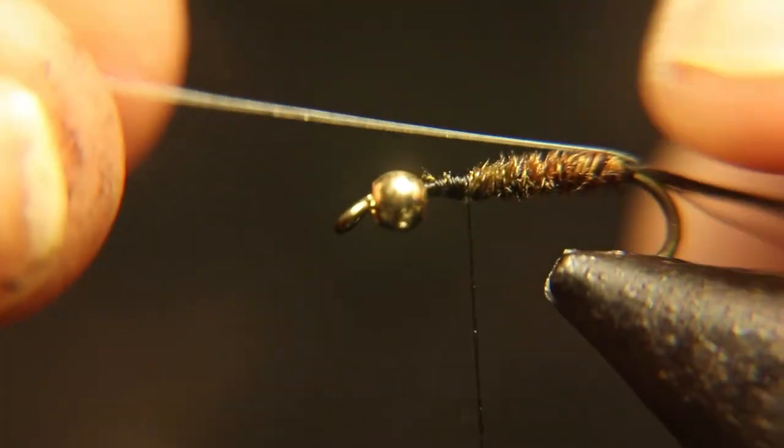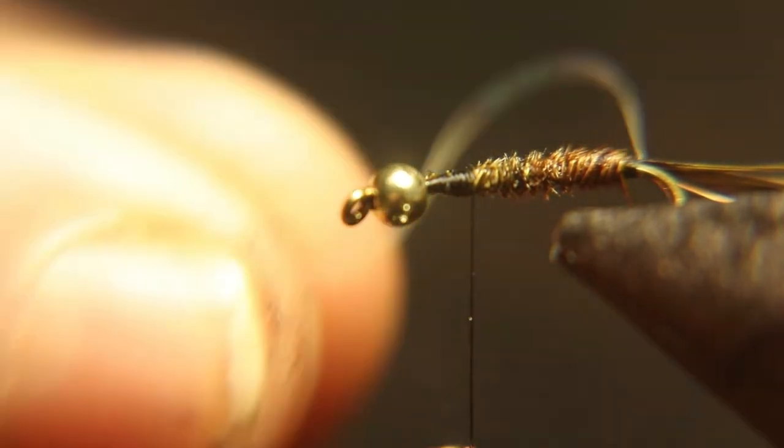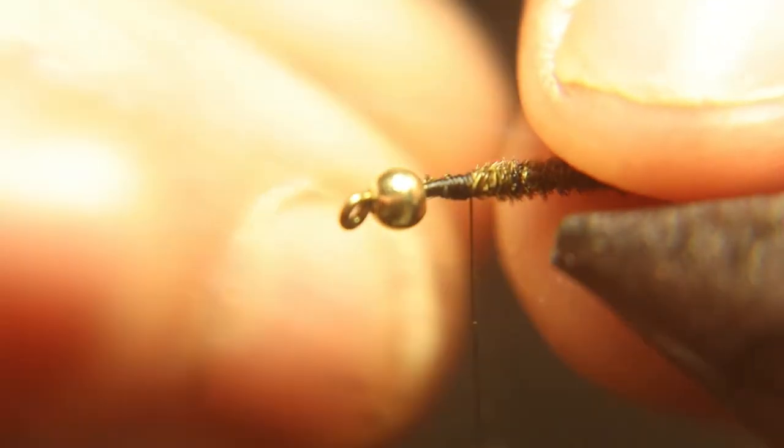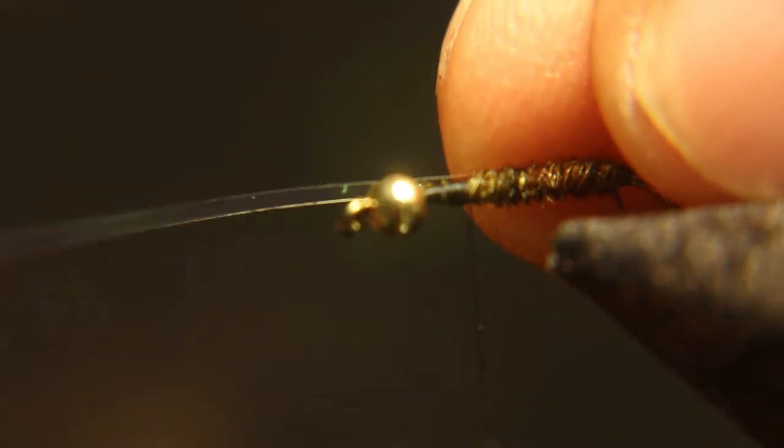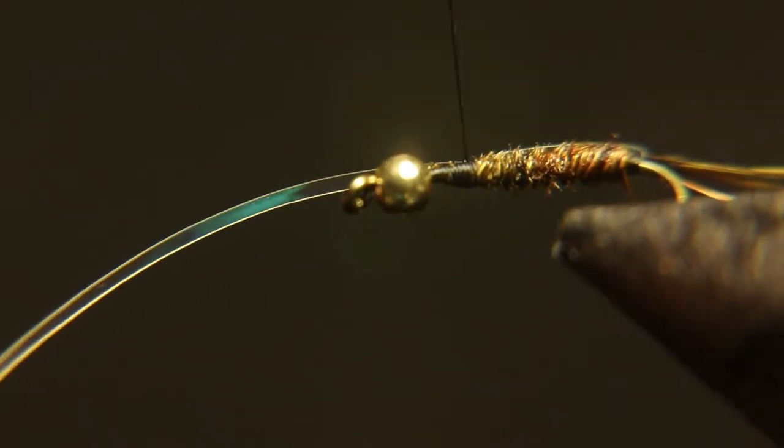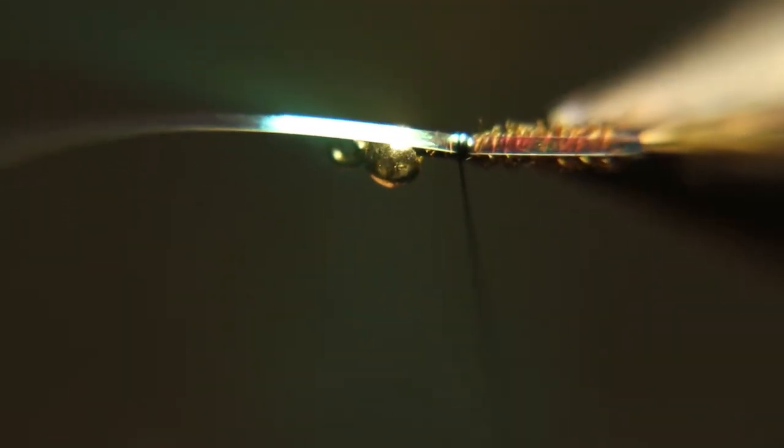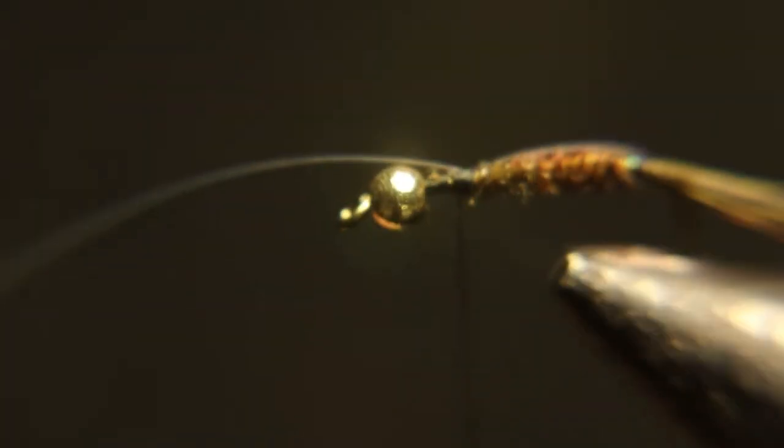Okay, now what we're going to do is pull that flat tinsel up over and tie it down right behind the bead. Then we're going to start ribbing this. I'm going to rib it the opposite way we wound that pheasant tail. It'll help you make a more solid fly and it'll help make your ribbing stick out better.